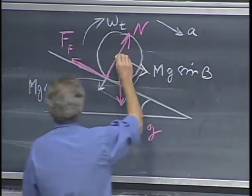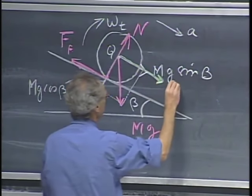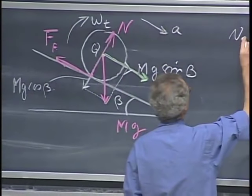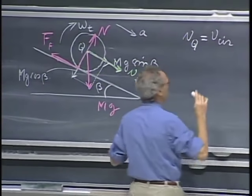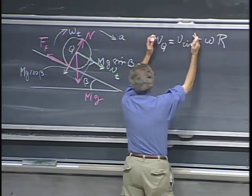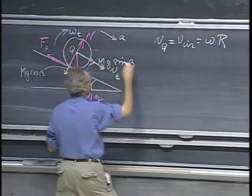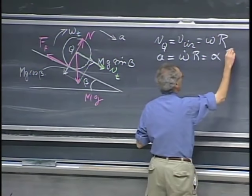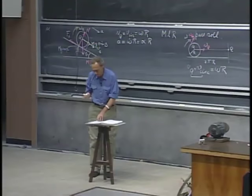The velocity of point Q, which changes with time, equals V_circumference, because that is the condition of pure roll — that equals ω·r. This is always true, but this equality only holds for pure roll. Taking the time derivative: the derivative of the velocity of point Q is by definition its acceleration, so I get a = ω̇·r = α·r, where α is the angular acceleration. This is the condition for pure roll.